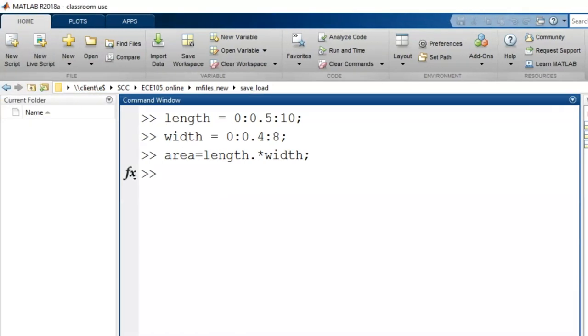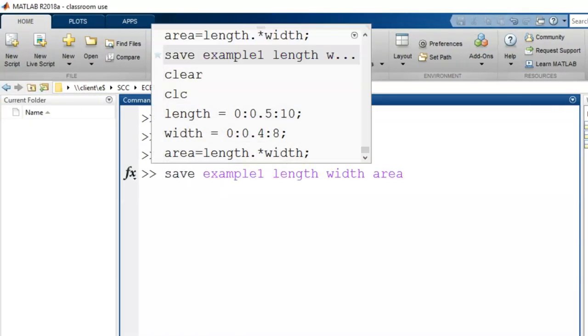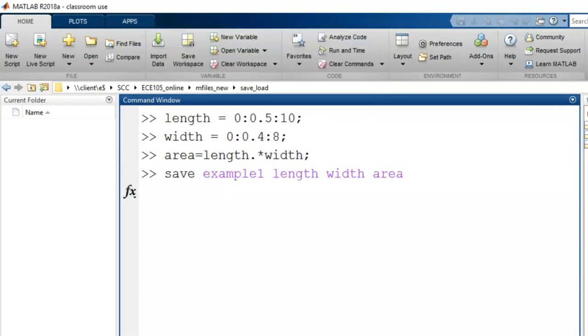To save these variables more permanently, we now use the save command. After this processes, notice that example one appears in my current folder. This is a .mat file and can be accessed by MATLAB later.